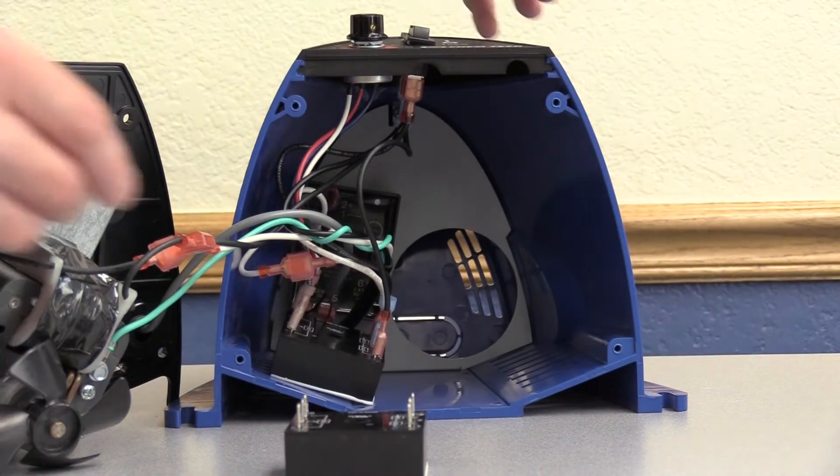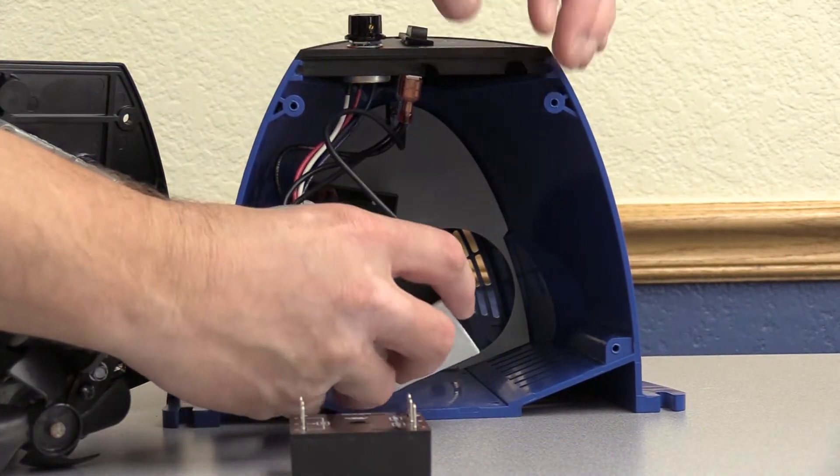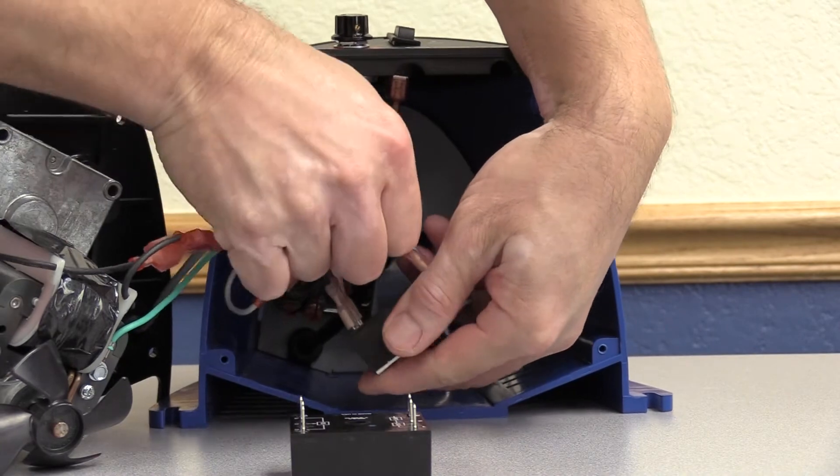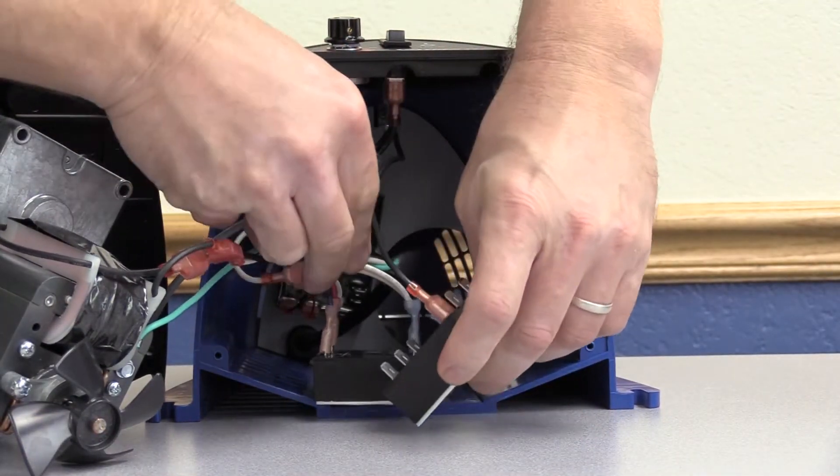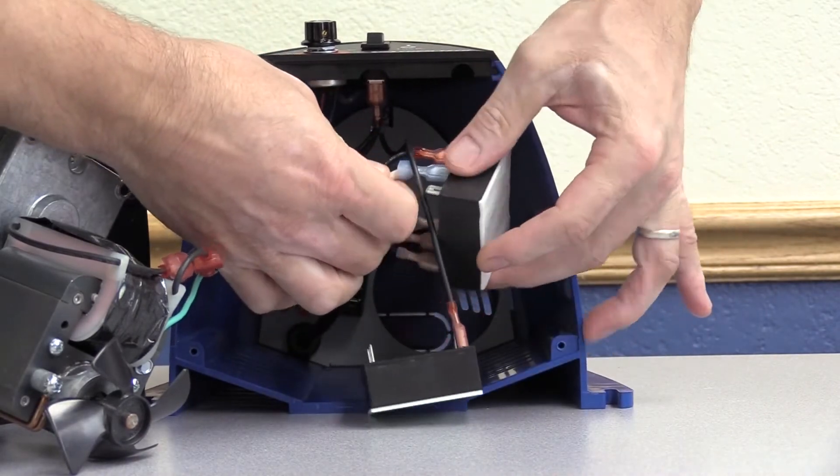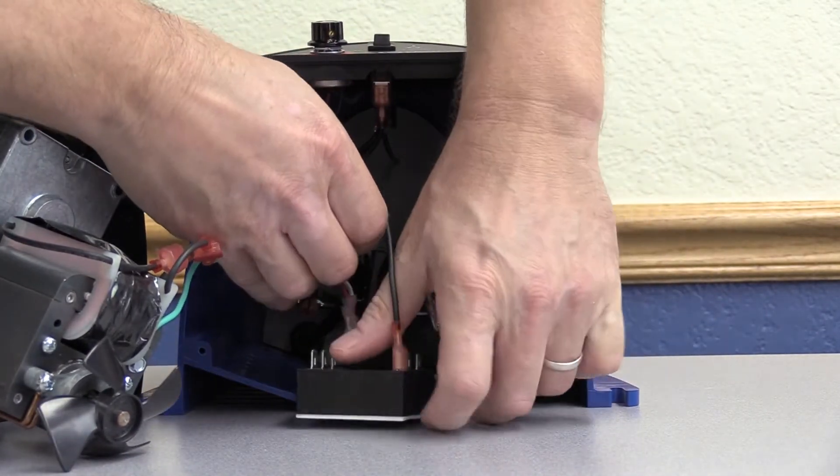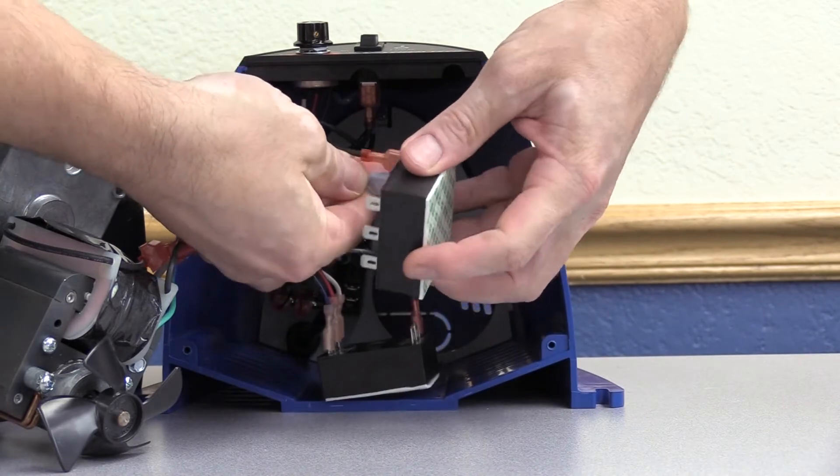Remove the wire connections one at a time from the old module to the new timer module. The wires will go to the same numbered spade connectors on the new module as the old timer module. The spade connectors on the new timer module may be in a different orientation.